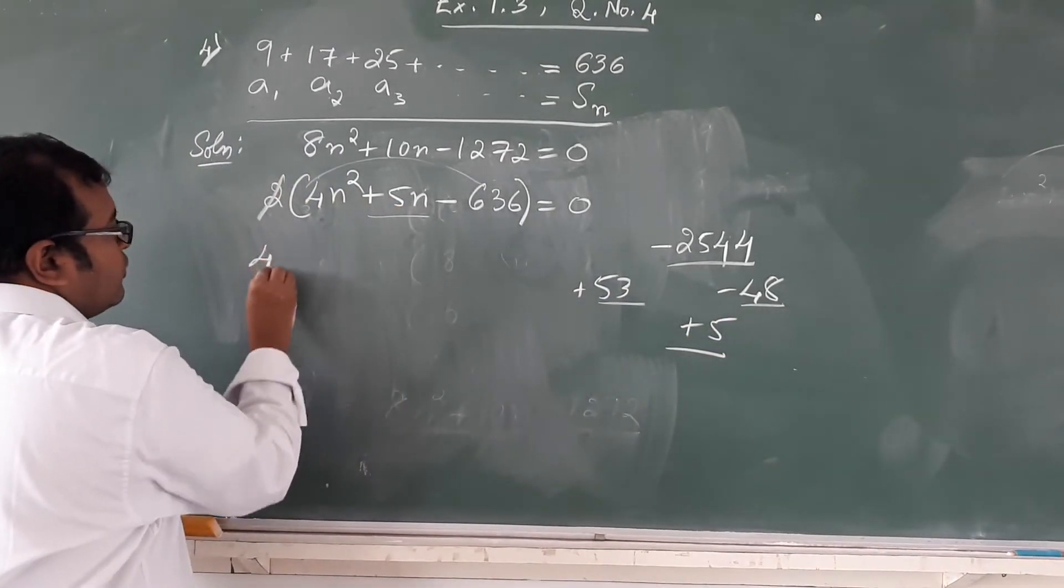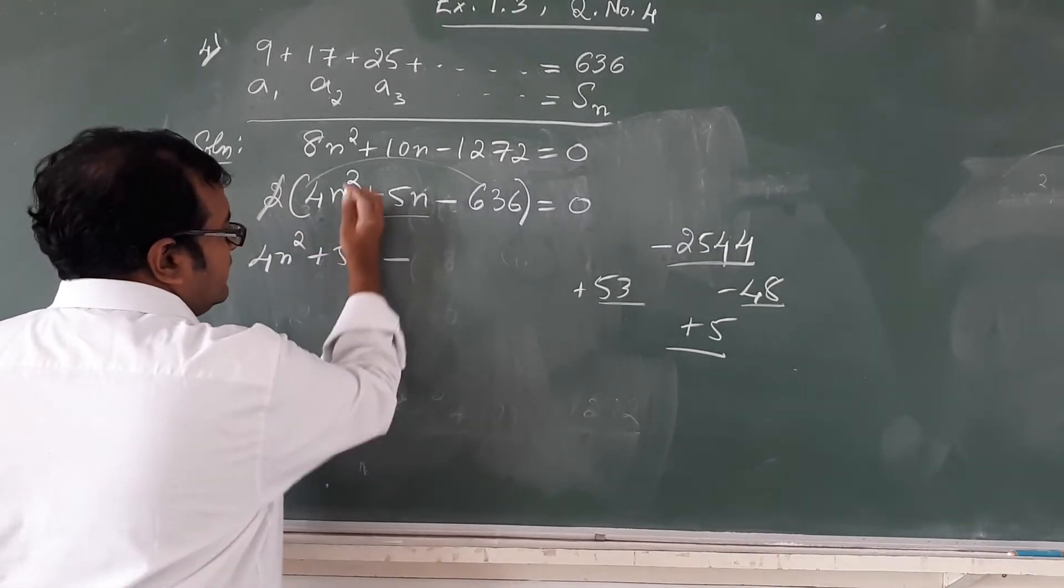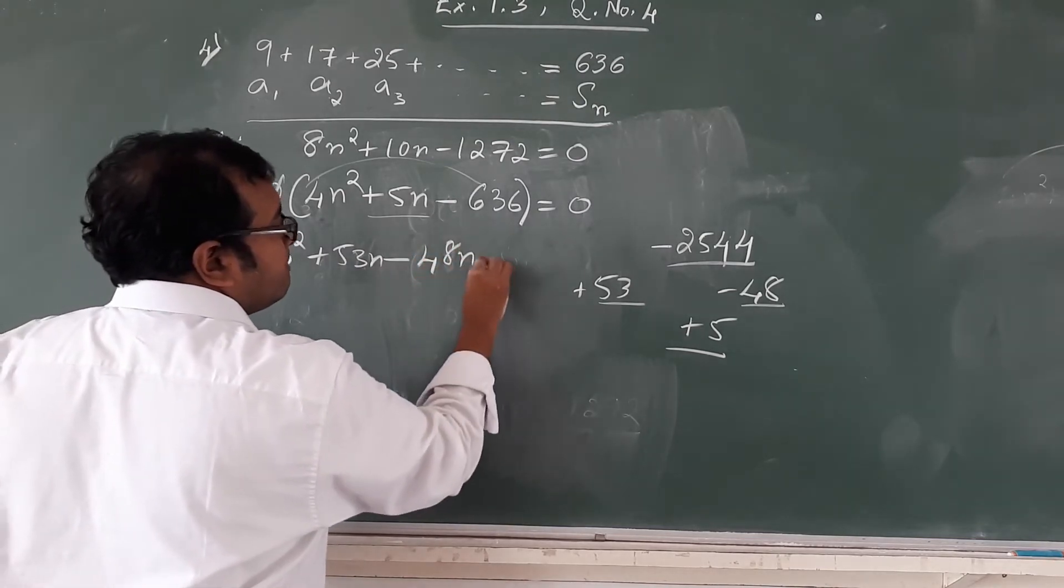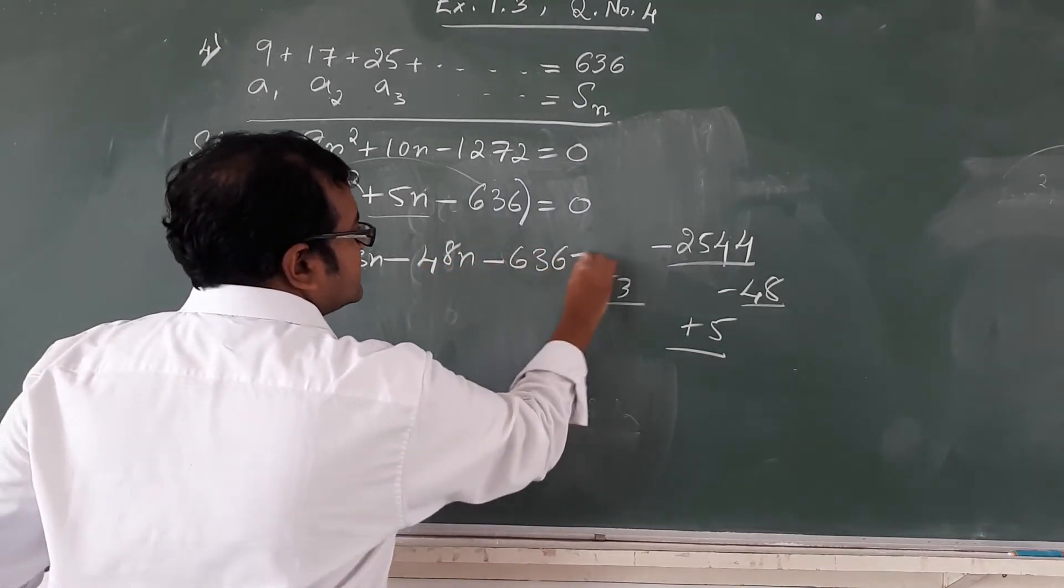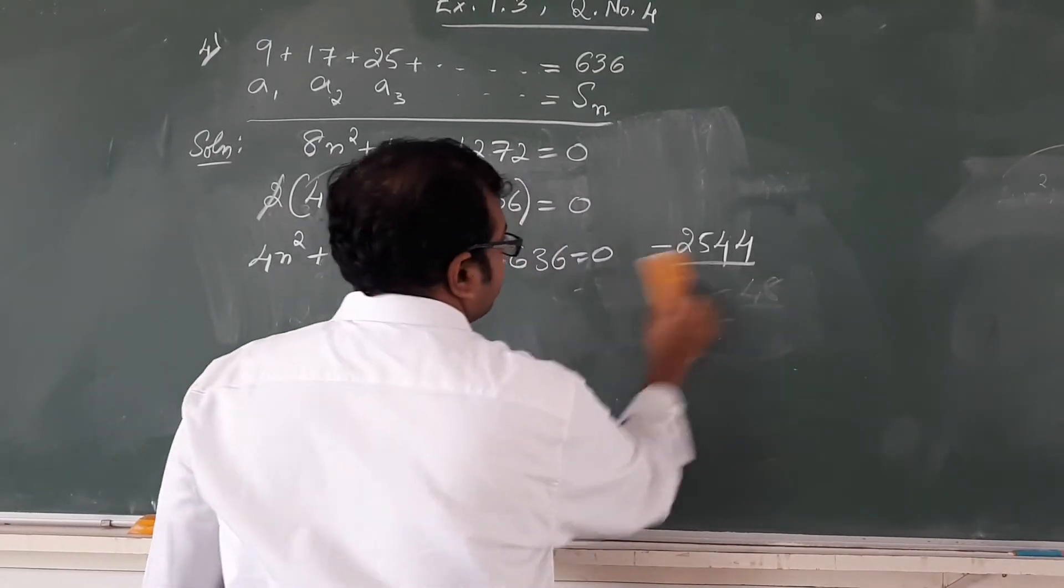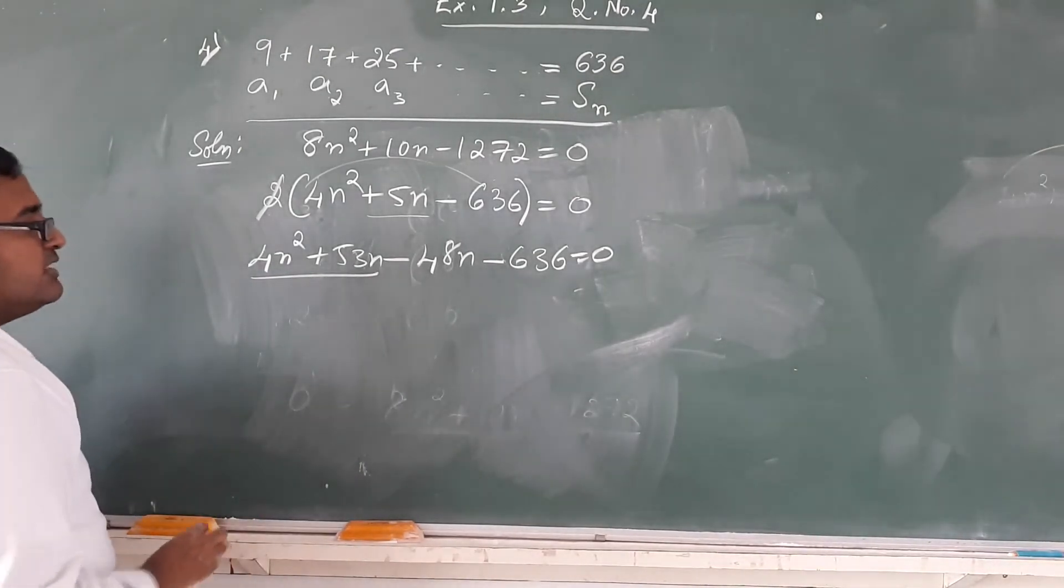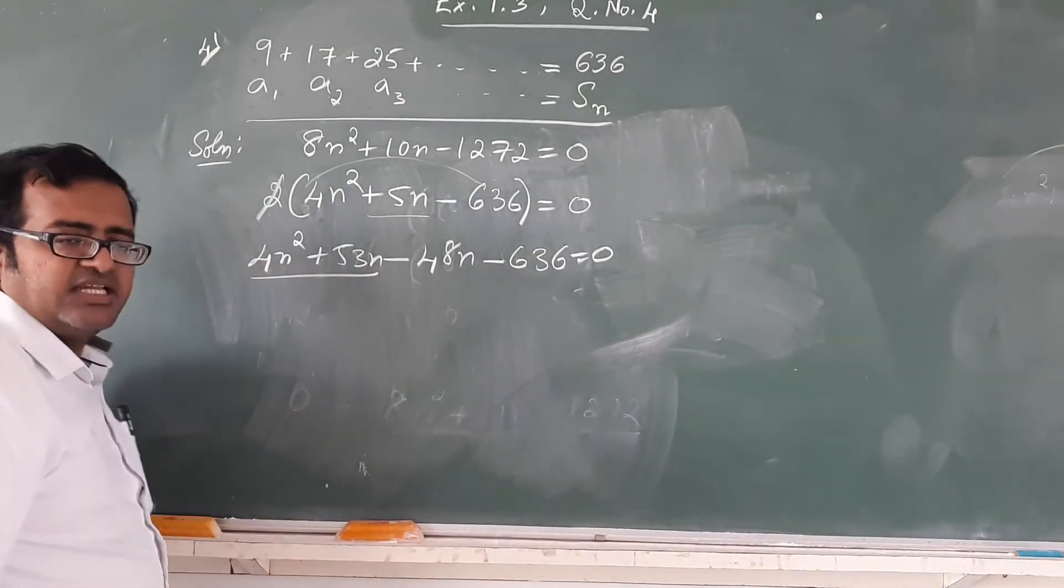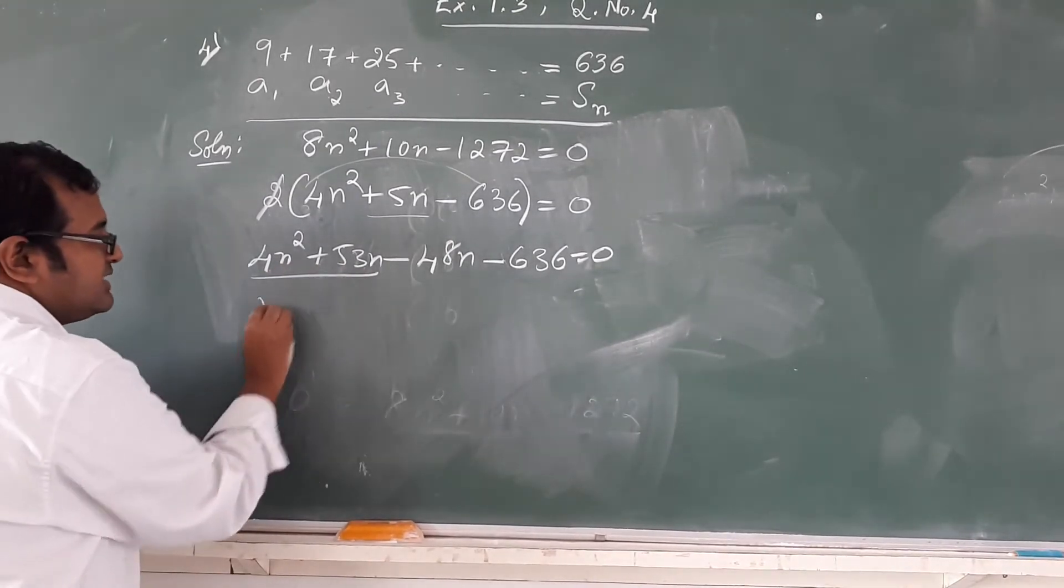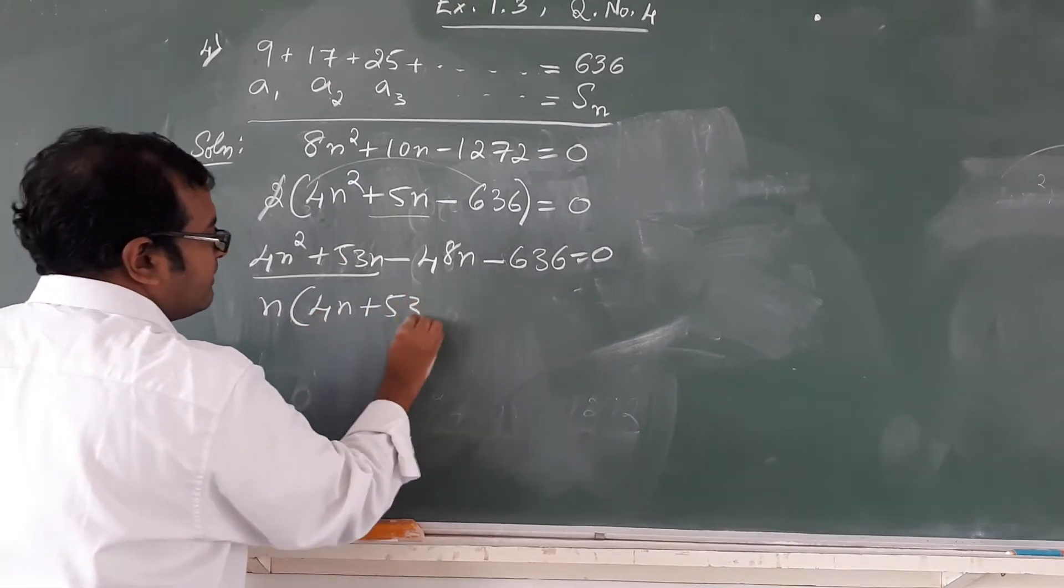So it becomes 4n square plus 53n minus 48n minus 636 which equals 0. Further taking out common from this, 4n square plus 53n, when the coefficient, there is nothing common, n square and n there is n common outside then remaining is 4n plus 53.